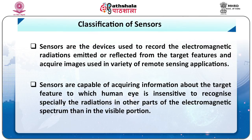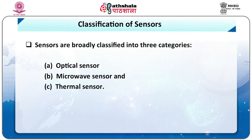The classification of sensors follows. Sensors are devices used to record electromagnetic radiations emitted or reflected from target features, acquiring images for a variety of remote sensing applications. Sensors are broadly classified into three categories: optical sensors, microwave sensors, and thermal sensors.